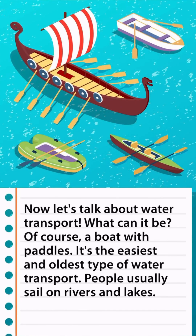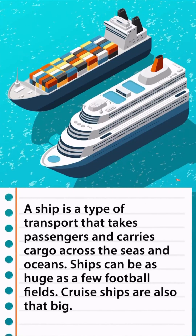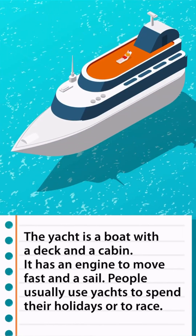Now let's talk about water transport. A boat with paddles is the easiest and oldest type — people usually sail on rivers and lakes. A ship takes passengers and carries cargo across seas and oceans, and can be as huge as a few football fields; cruise ships are also that big. A yacht is a boat with a deck, cabin, engine, and sail, used for holidays or competitions.